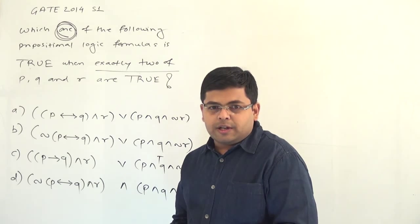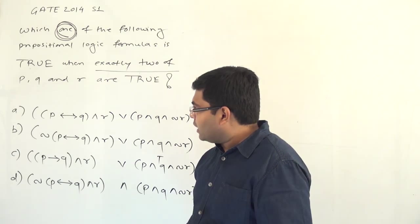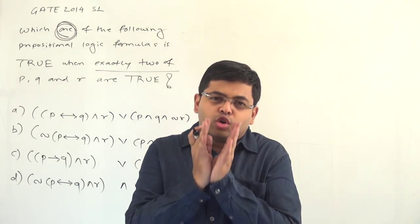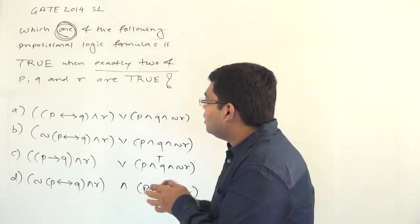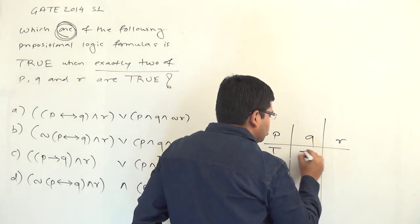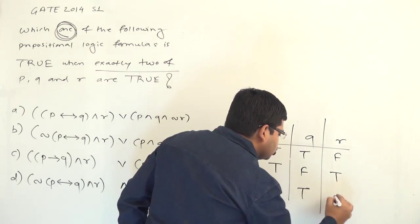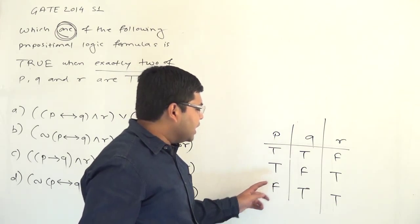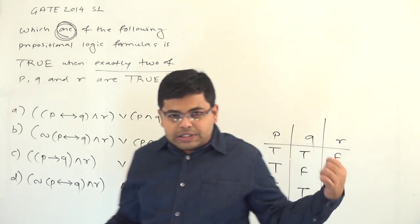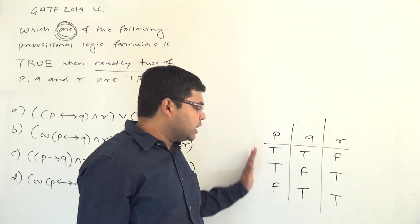After reading this question, another question comes to mind: which two variables is the question talking about? Is it talking about a particular combination — like, let me draw it here — in all three combinations you can see exactly two variables are true and one is false. So which particular combination is the question referring to? Should we check a particular combination or all combinations? That is the fundamental confusion that may arise.